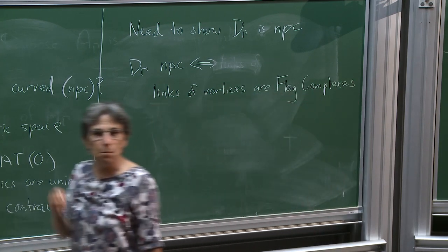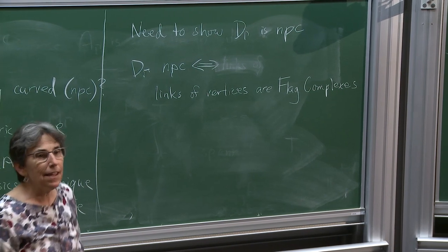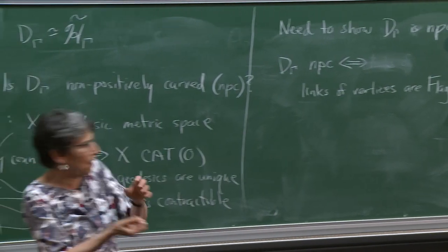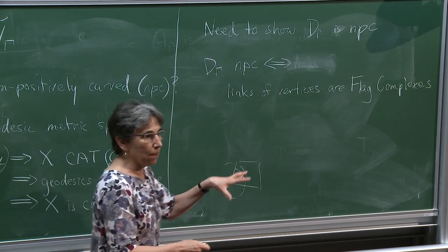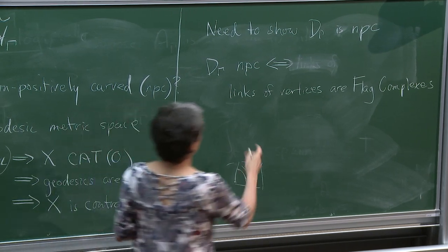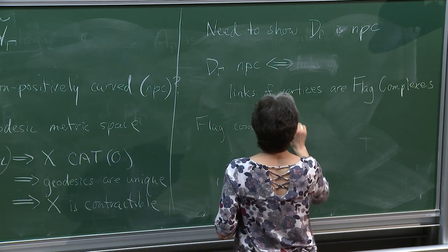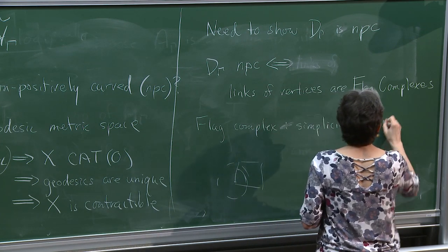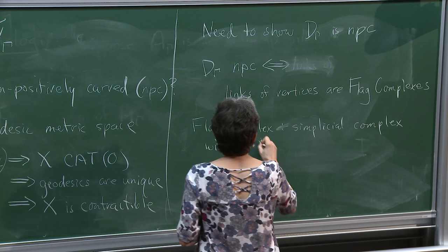We need to remember what it means to be a flag complex, because we're going to try to check this. The link is a simplicial complex — because at a point, inside every cube the link sees a little simplex. A flag complex is a simplicial complex with no empty simplices.